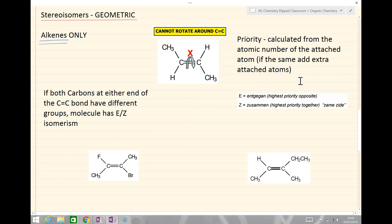So, the priority is calculated from the atomic number of the attached atom. And if it's the same, then we add extra attached atoms until we find out a difference. And we'll look at three examples just to try and elucidate this point.